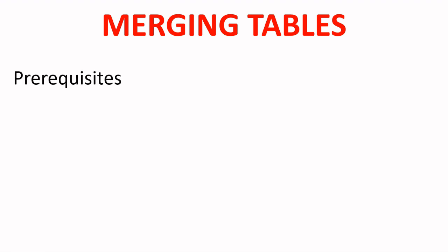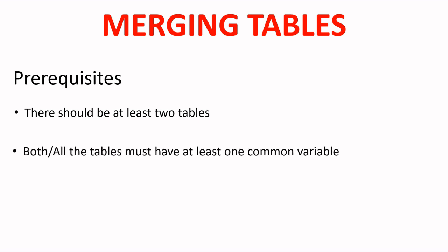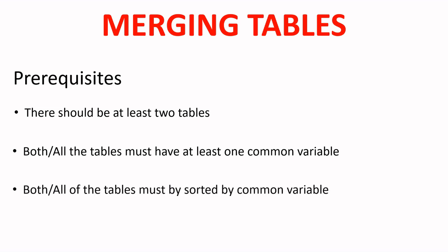To merge two or more tables, there are certain requirements which must be fulfilled. First, there should be at least two tables. Second, all tables must have at least one common variable — a basis on which you can do the merging. Third, all tables must be sorted on that common variable.